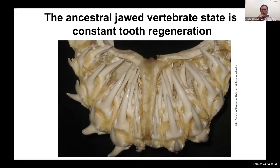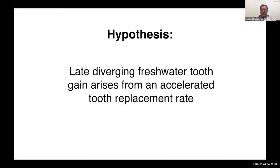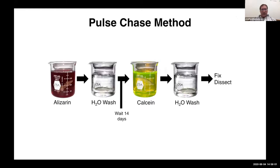Fish are like sharks in that they retain the ancestral vertebrate state of constant tooth regeneration. Humans replace their teeth once — baby teeth and adult teeth — whereas mice don't replace their teeth at all, so we know very little about the genetic basis of tooth replacement. We wondered whether this late-diverging increase in tooth number could result from an accelerated tooth replacement or regeneration rate.